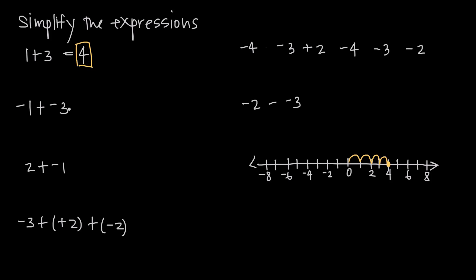On the other hand, when we add two negative numbers like negative 1 plus negative 3, a negative number tells us to move to the left on the number line. We start at the origin and move to the left 1 unit for negative 1, then continue moving to the left 3 more units — 1, 2, 3 — and we get to negative 4. So negative 1 plus negative 3 equals negative 4.